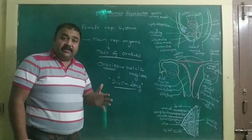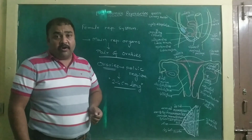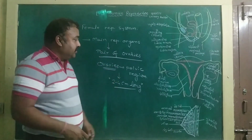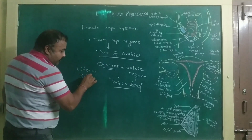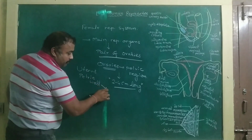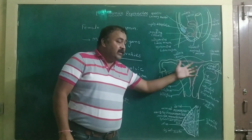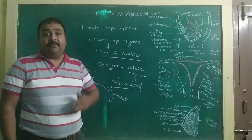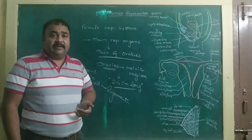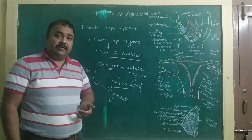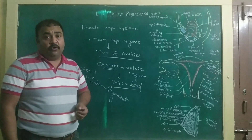The ovaries are located in the lower abdomen. Each is a 2 to 4 cm long structure, and it is connected to the uterus as well as the pelvic wall with the help of ligaments. The ovaries are responsible for the secretion of female sex hormones — estrogens and progesterone. The main function of the ovaries is also to produce ova, or eggs.